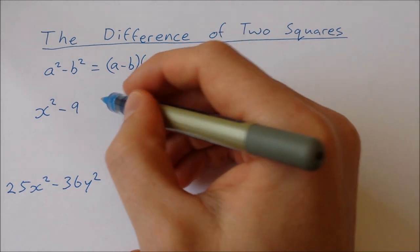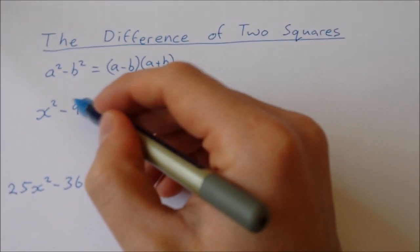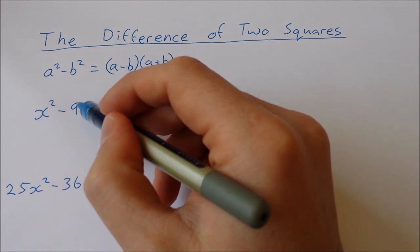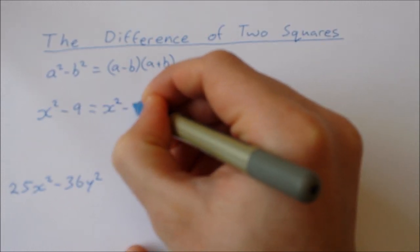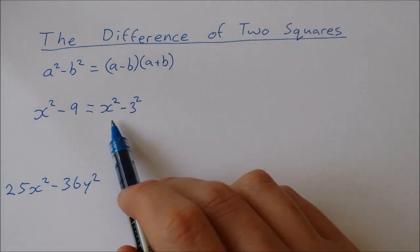So x squared minus 9, the first thing we need to do to that is actually write it as two squares. So x squared is already a square, but we need to write 9 as 3 squared. Now we have the difference of two squares.